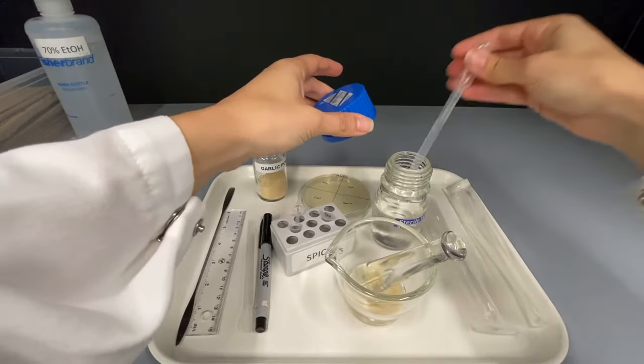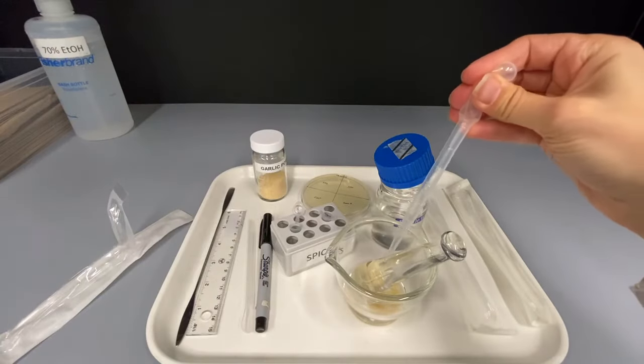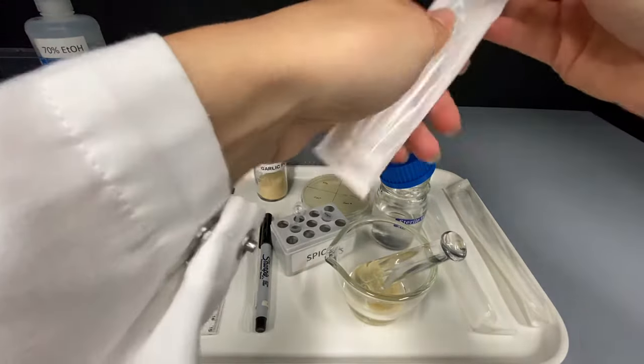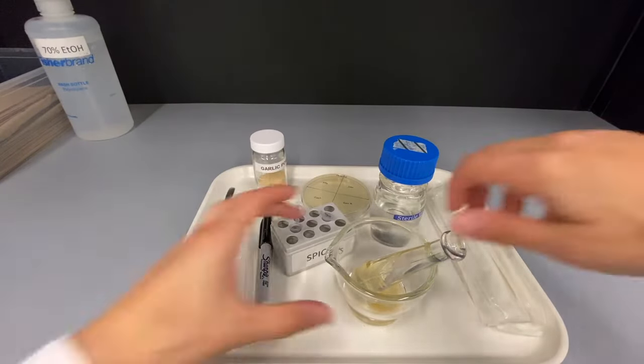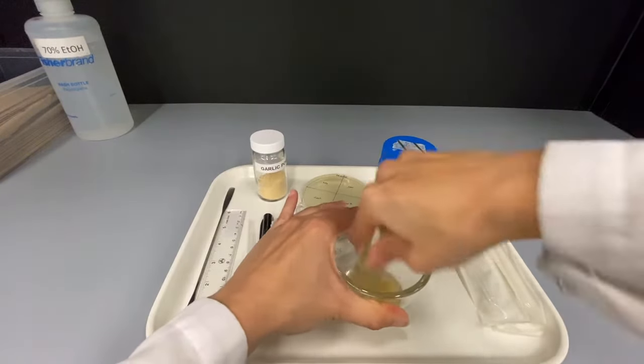Add 2 milliliters of sterilized water using a sterile plastic pipette. Grind for 10 to 20 seconds.